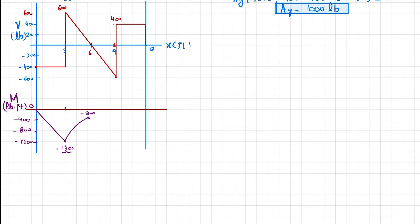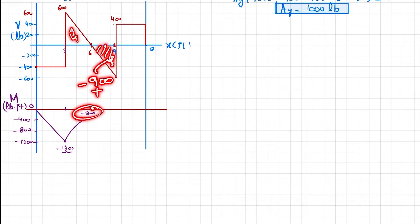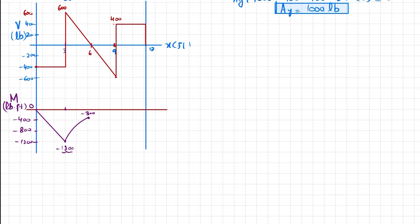The third area is the same triangular shape but negative, giving minus 900. So minus 300 plus minus 900 brings the moment back to minus 1200 at point B (9 feet), again with a clockwise parabolic curve.